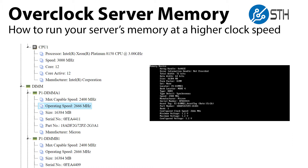Today we're going to cover a little trick we've been using for years, which allows you to overclock your RAM in a system. We've been using this trick on memory since the Intel Xeon E5 2600v1 Sandy Bridge generation of CPUs, when we have the wrong memory speed and are in a time pinch in the lab.